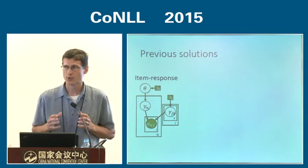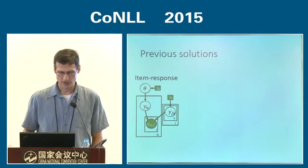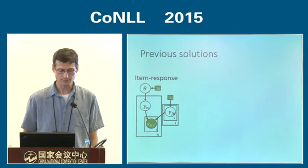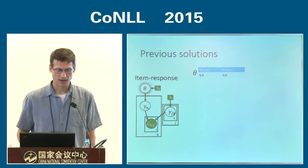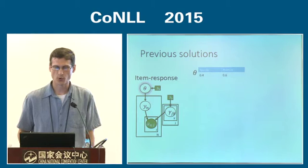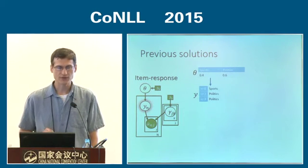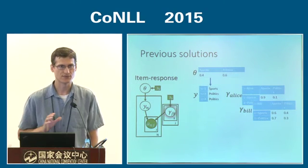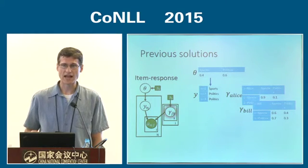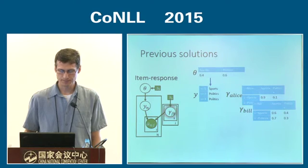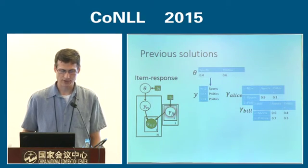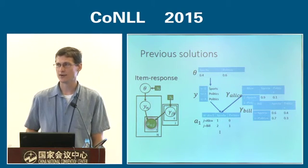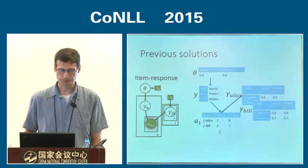Previous work that tries to capture some of these factors centers on an item response model proposed by Dawid and Skene in 1979, when they were labeling the presence of volcanoes on Mars. In the Bayesian version of their model, we first draw an overall class proportion — say sports and politics — then for each of N documents draw a true unobserved label. For each of J annotators, we draw a confusion matrix; Alice and Bill corrupt labels in different ways. We then generate annotations by corrupting the true label of each document according to each annotator's error characteristics.